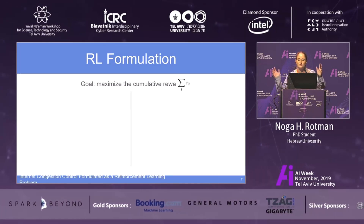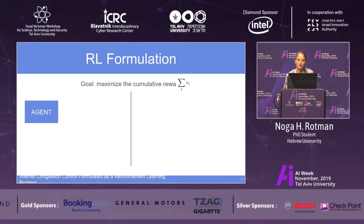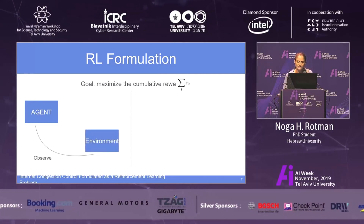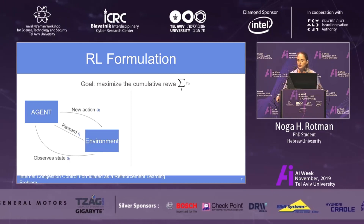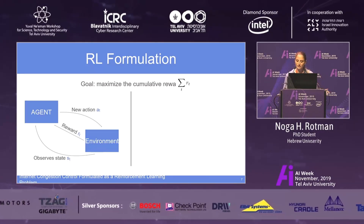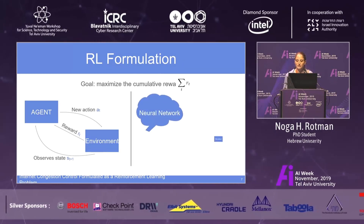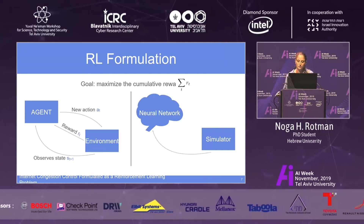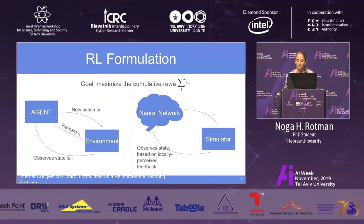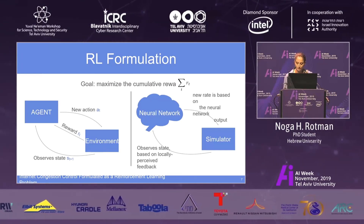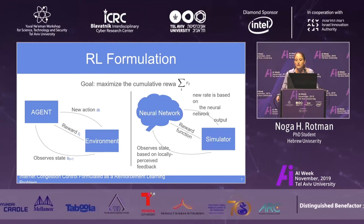The goal of reinforcement learning is to maximize reward. In this scenario, an agent interacts with an environment, observes a state, outputs an action taken in the environment, and the environment outputs a reward corresponding to that action. At the next timestep, the agent observes a new state. In our formulation, we use a neural network as our agent and an in-house simulator for the environment. We use localized feedback — a list of statistics — and output a number to set the new rate, along with a reward function known in the congestion control world.